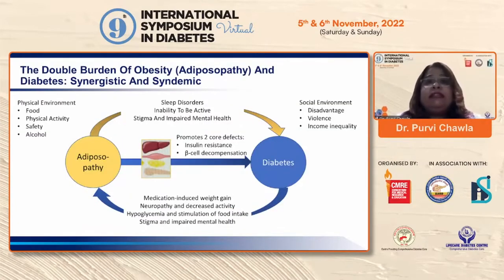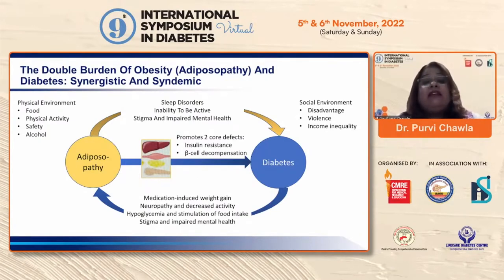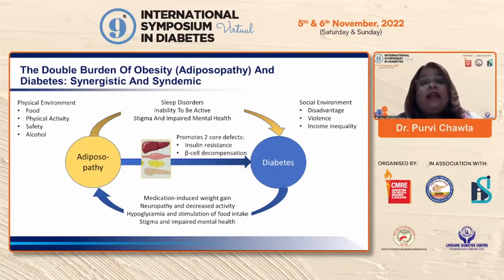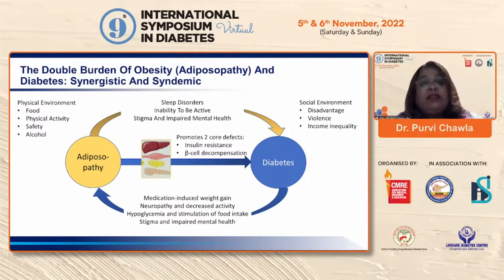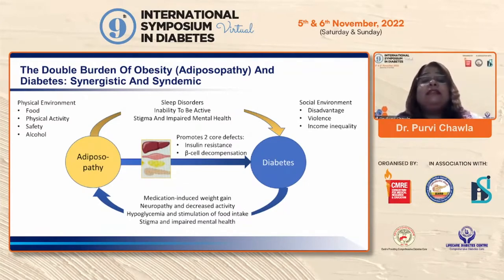This double burden of obesity or adiposopathy and diabetes is synergistic and syndemic in a negative way, because they both promote the two core defects: insulin resistance and beta cell decompensation. Adiposopathy may lead to sleep disorders, reduced activity, social stigma, and impaired mental health — all of which feed into diabetes. Diabetes, on the other hand, further feeds into obesity or adiposopathy.